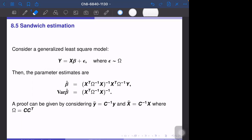Hi, section 8.5, the sandwich estimation. This section discusses how to estimate the variance of beta hat when the original formula does not work well.